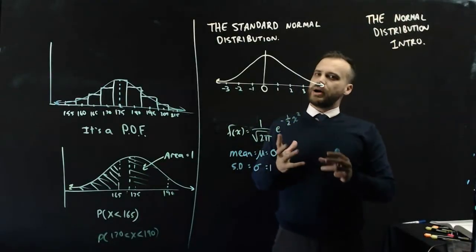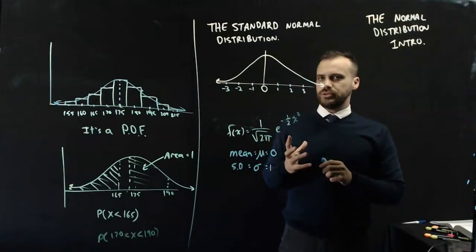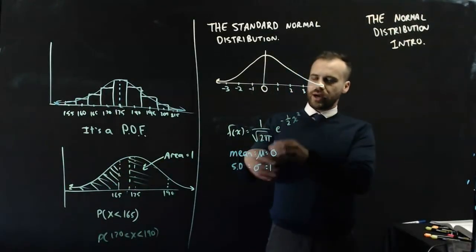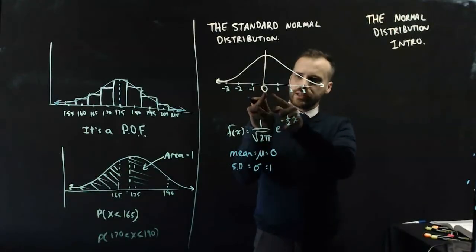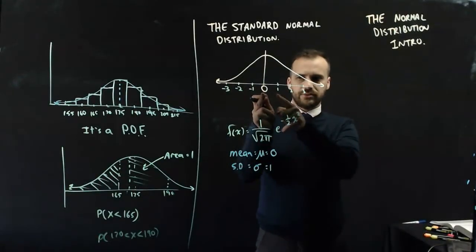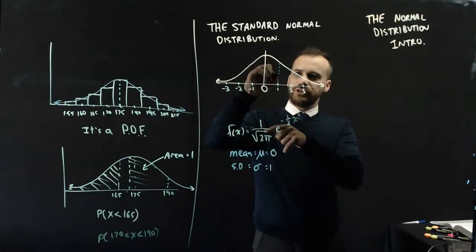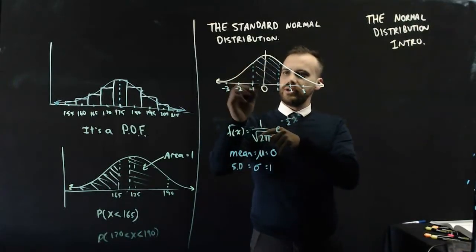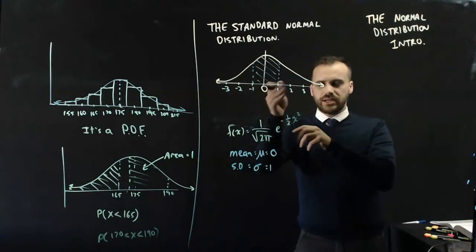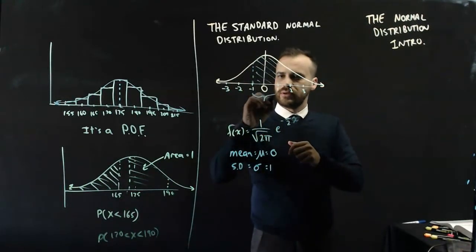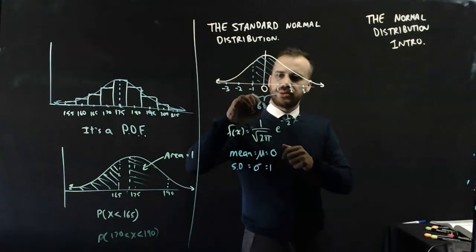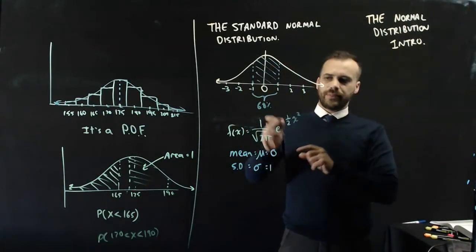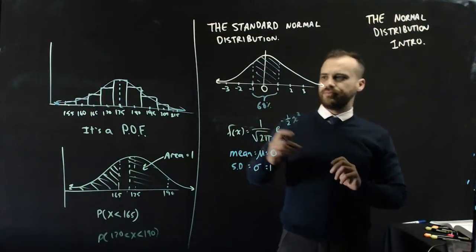Now, a really nice part about the normal distribution, the standard normal or any other normal distribution, is that if you move one standard deviation away from the mean in either direction, the area under that curve there, between negative 1 and 1, 68% of values fall between negative 1 and 1. It's just a number you need to remember, 68%.